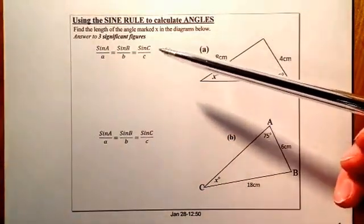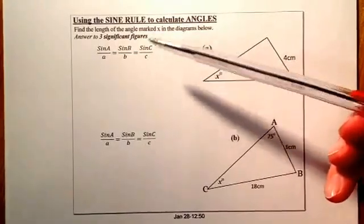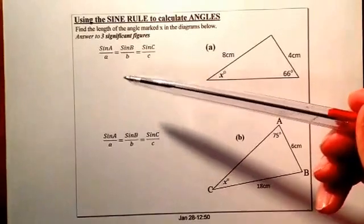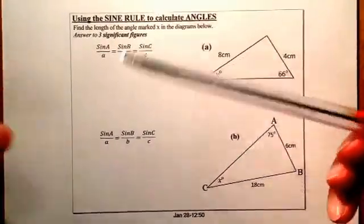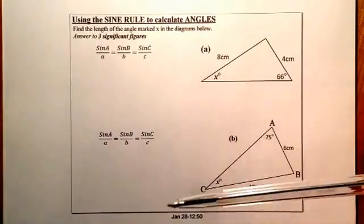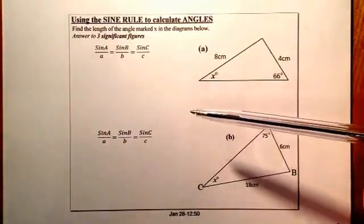Now in your formula list, you don't actually get this formula here, but what you get is a over sine A, b over sine B, and c over sine C. All I've done is just flip the formula over to help me work through this question when I'm working through an angles question.